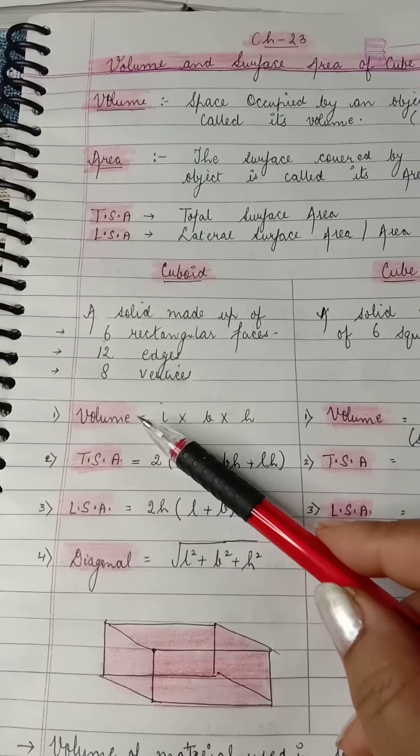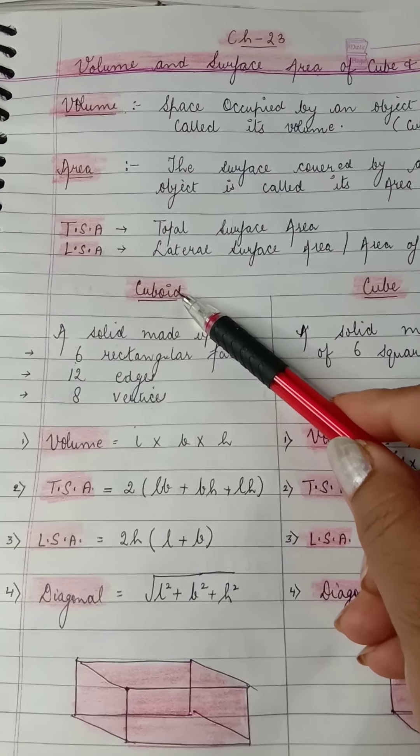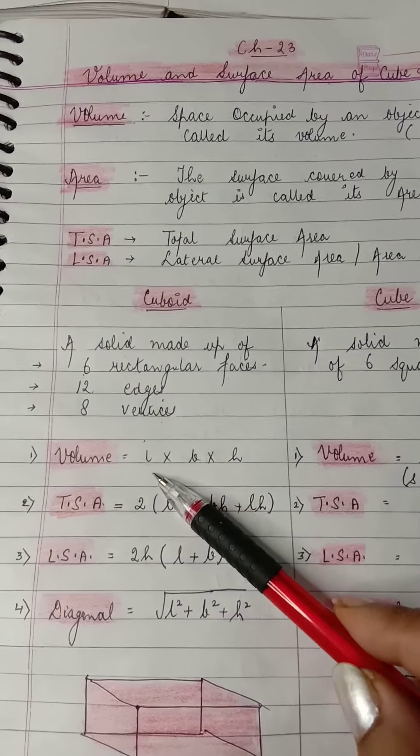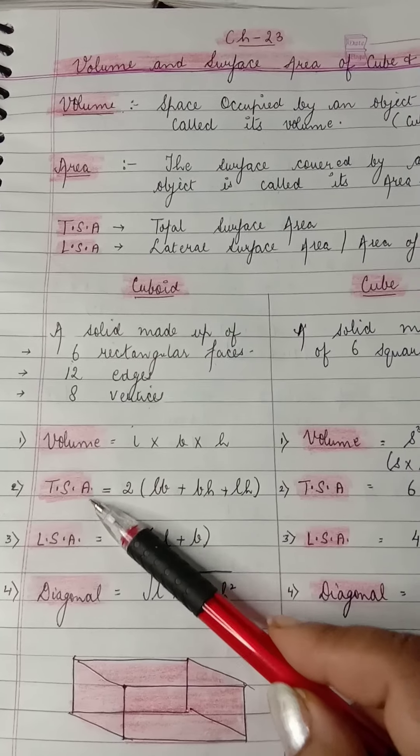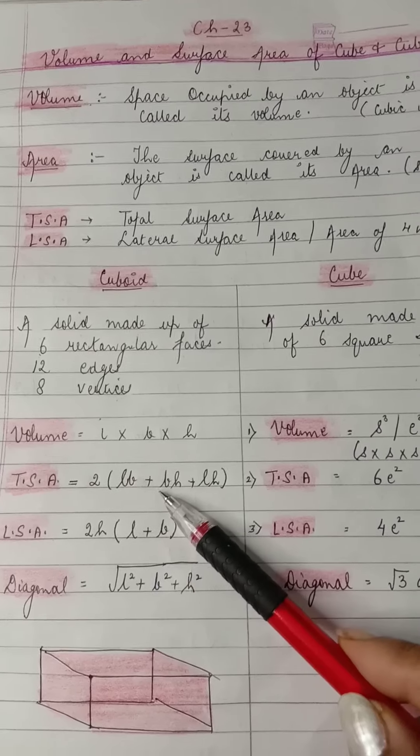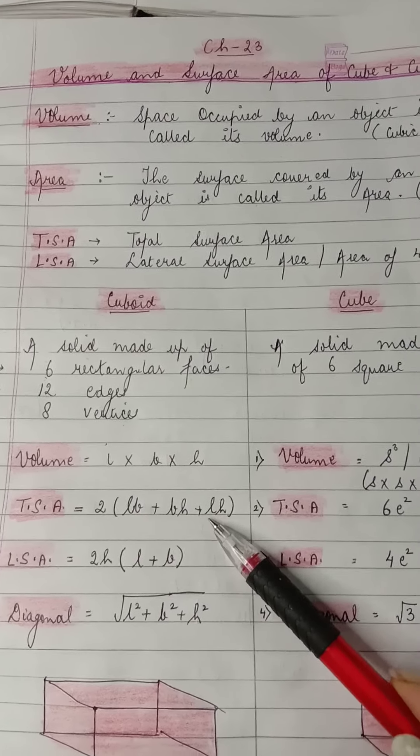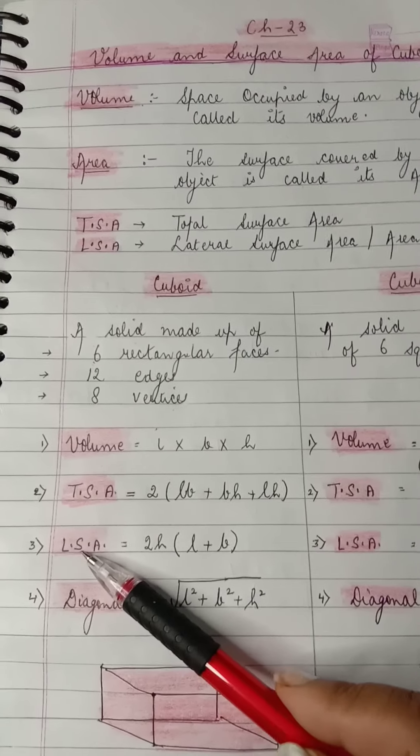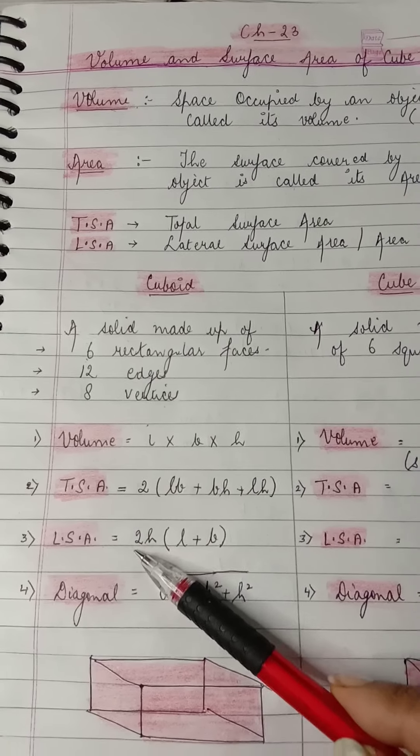Let's talk about the formulas. Please learn these formulas. Volume: first of all we'll talk about the formulas of cuboid. Volume is equal to L into B into H, that's length, breadth, and height. TSA, that's total surface area: 2 bracket LB, that's length into breadth, plus breadth into height, plus height into length. Or length into height, you can write anything, bracket closed. Next, LSA, that's lateral surface area or area of the four walls: 2H, that's 2 into height, bracket, length plus breadth.